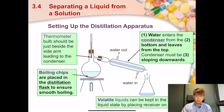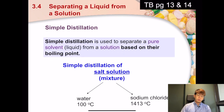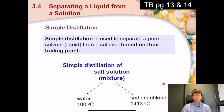If the liquid is volatile — meaning it has a low boiling point — it should be kept in the liquid state by placing the collecting flask in ice, otherwise it will evaporate away. A common example is a salt solution, which contains salt (sodium chloride) as well as water.